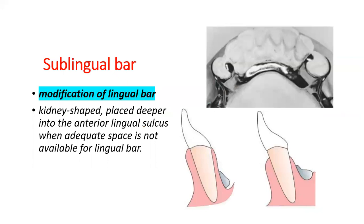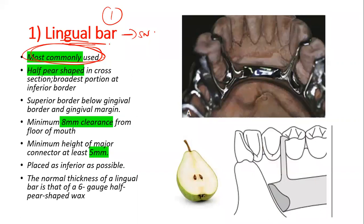There is also a modification of the lingual bar — the sublingual bar — which is kidney-shaped and placed in the anterior lingual sulcus when there is inadequate space for the regular lingual bar.